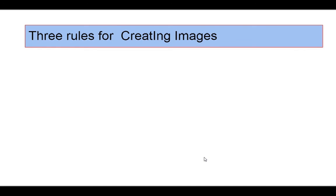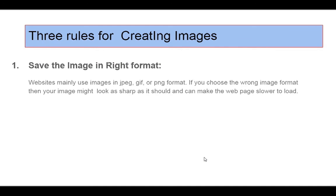So we have understood how to insert an image, how to align an image, and how placing an image tag in different locations of the code affects the display. Regarding formats, JPEG is used for photographs, PNG and GIF are used for transparent or other format images. This is important because if you don't save in the right format, the page size becomes larger, loading time increases, and your website becomes slower, affecting traffic.